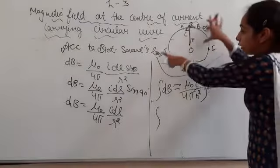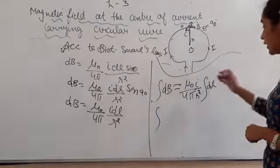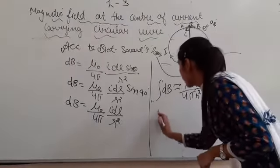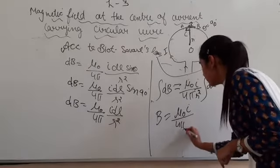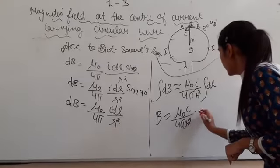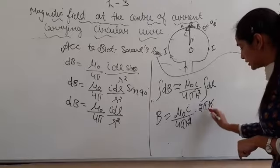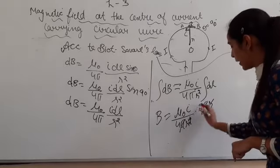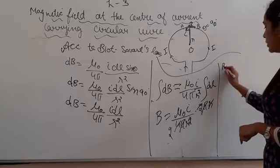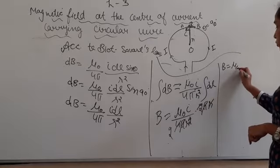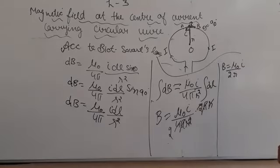We have the whole length of the circular coil, the whole circumference. Integrating dL from 0 to 2πr, it will become μ₀I/4πr² multiplied by 2πr. One r will be canceled, π will be canceled, 2 and 4 gives us B equals μ₀I/2r.